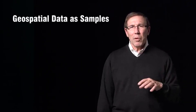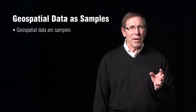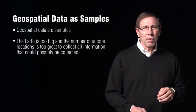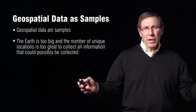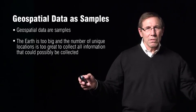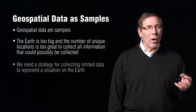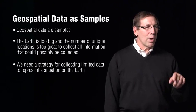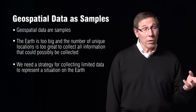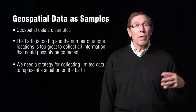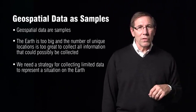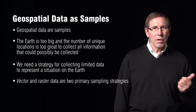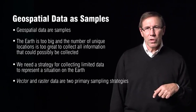Data are samples. The Earth is just too big and detailed to collect all the information, all the data. So we go out with a scheme in order to sample the Earth. It allows us to represent the Earth, we hope in an accurate way, with a lesser number of points. There are two primary schemes for sampling the Earth: vector and raster.